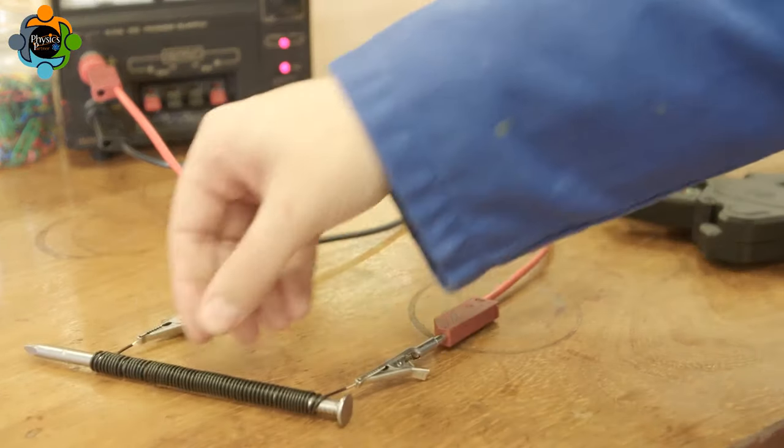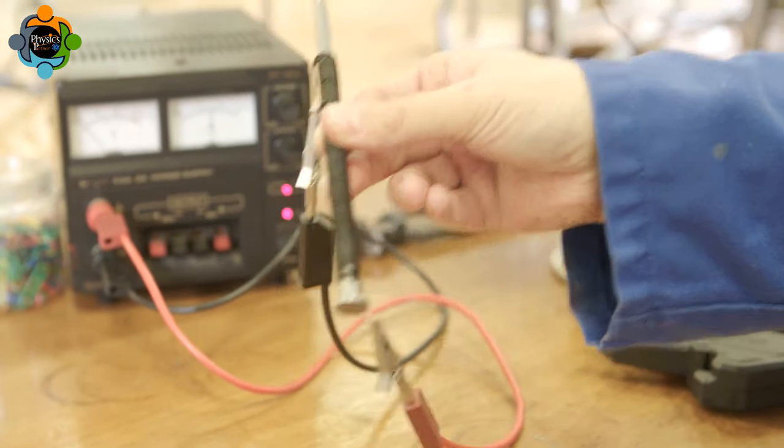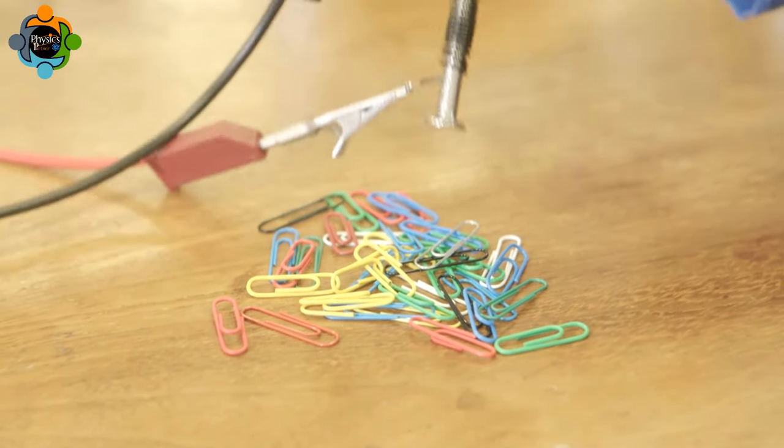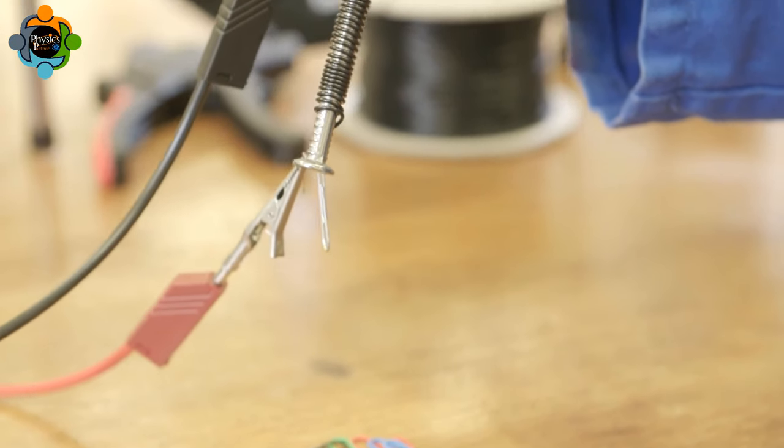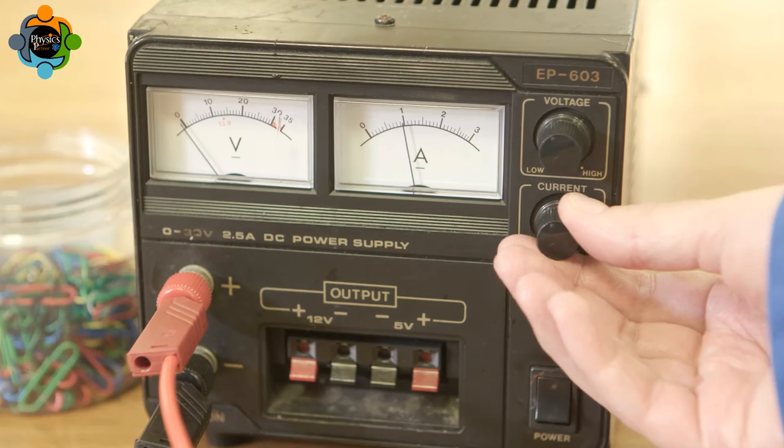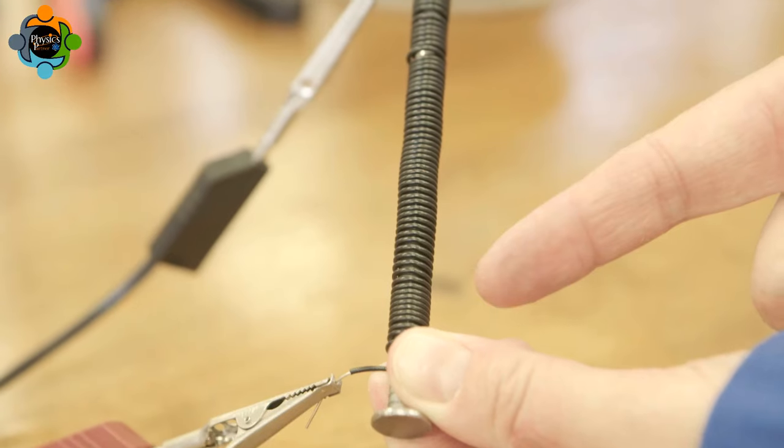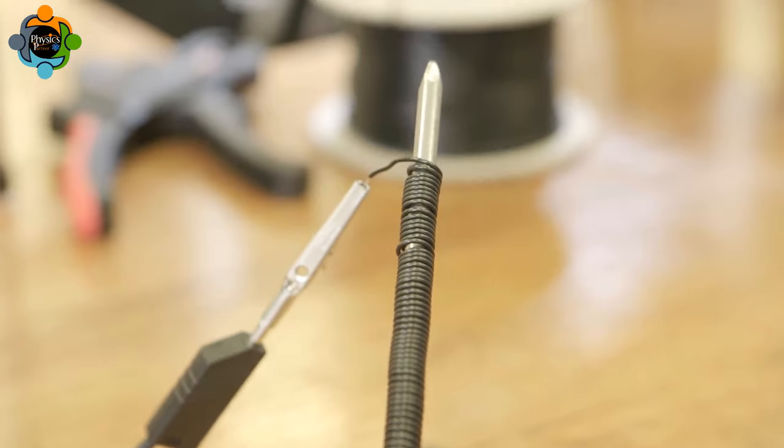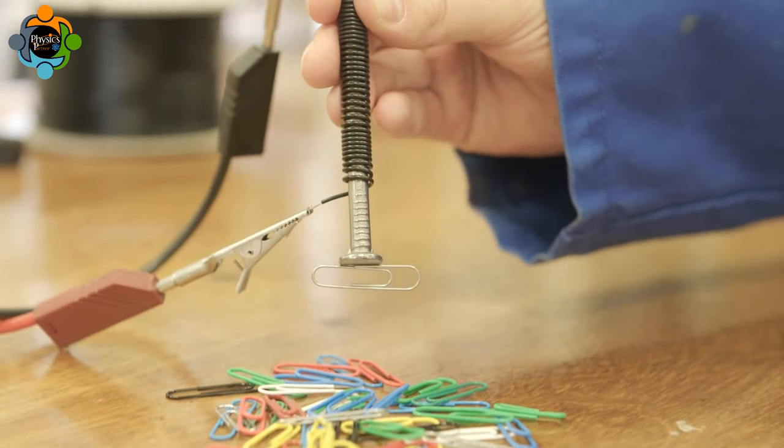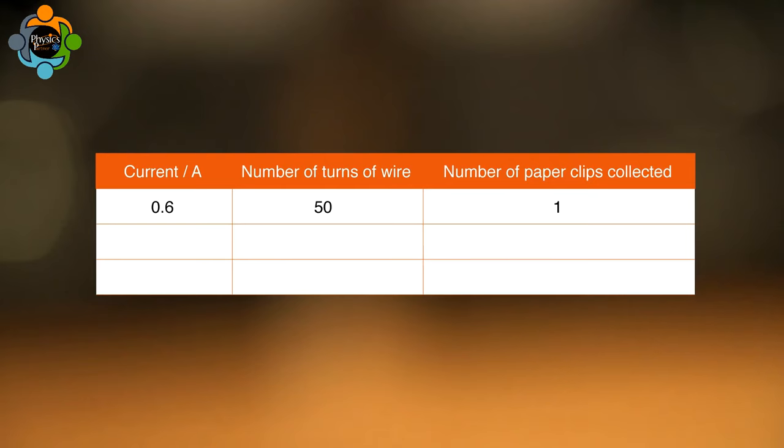The strength of the electromagnet can be judged by counting the number of paper clips picked up. Now that the electromagnet works, its strength can be investigated. The variables that are going to be changed are the current and the number of turns of wire. For a control measurement, the electromagnet strength with 50 turns of wire is tested.